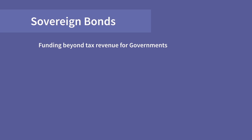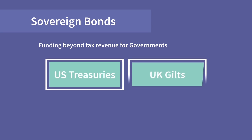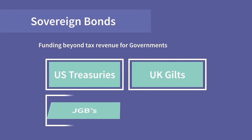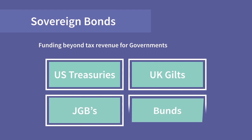In the US, they are called treasuries. In the UK, gilts. In Japan, JGBs. And in Germany, they are called bunds.